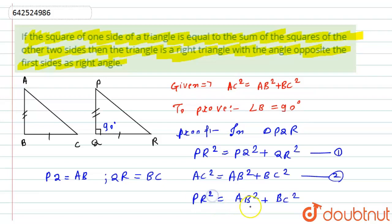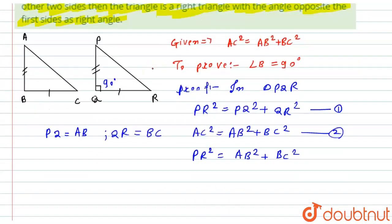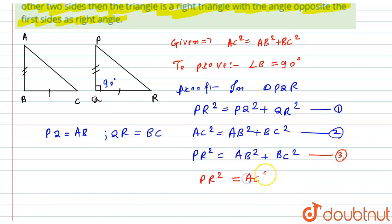So PR squared becomes equal to AB squared plus BC squared. Now if I compare equation number two and this equation number three, I get that PR squared equals AC squared, which gives us PR equals AC. So the third side of this triangle will also become equal.